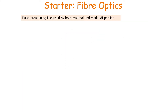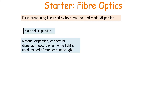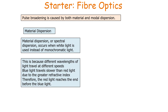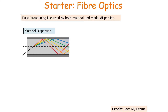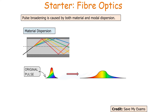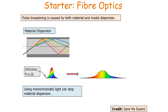Pulse broadening is caused by both material dispersion and modal dispersion. Material dispersion, or spectral dispersion, occurs when white light is shone down the fibre optic as opposed to monochromatic light. White light is made up of many different wavelengths of different colours, and they all travel at different speeds — for example, blue travels slower than red light because blue has a greater refractive index. So red light will reach the end of the fibre optic before blue light, causing the different colours to spread out. This causes the original pulse to broaden. Using monochromatic light can stop material dispersion from taking place.